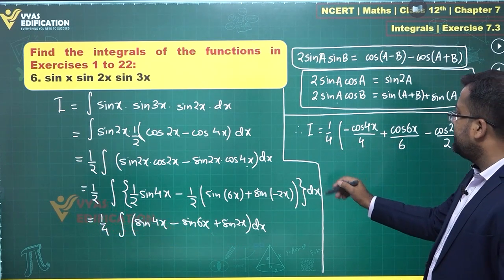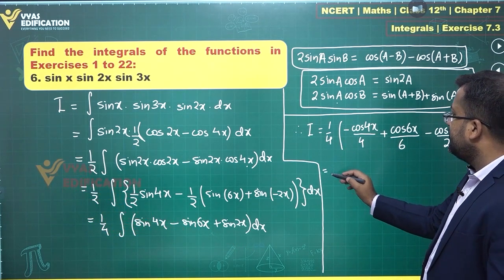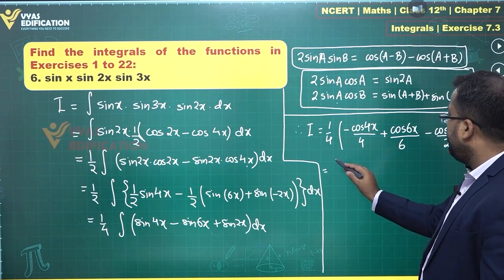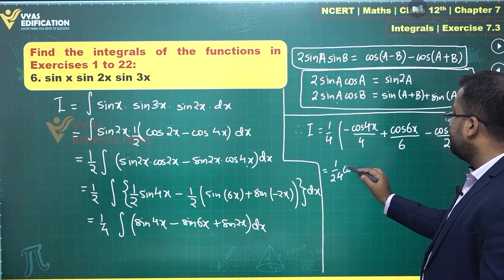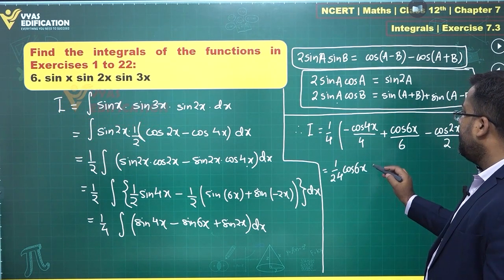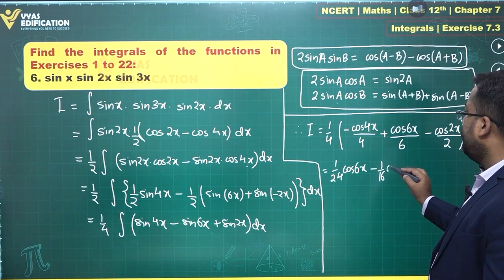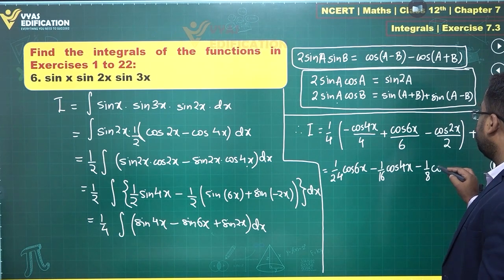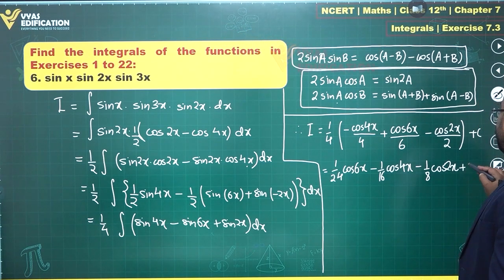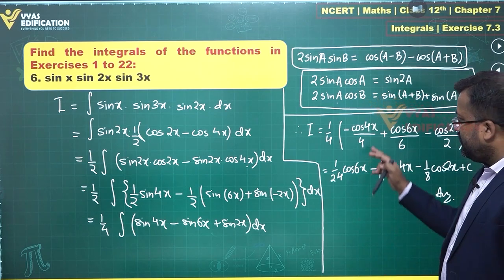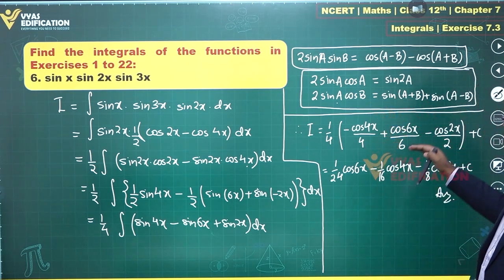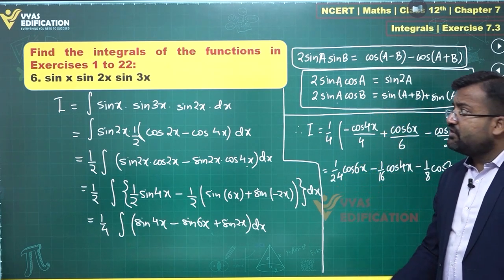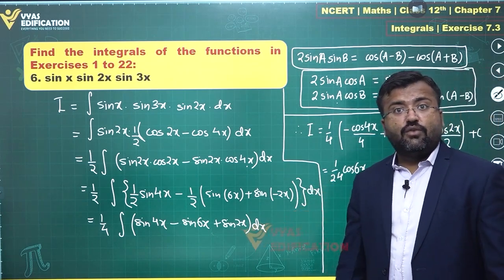At max, what you can do is you can multiply this 4 inside or you can leave the answer at this stage. What you get is 1 by 24 cos(6x) minus 1 by 16 cos(4x) and minus 1 by 8 cos(2x) plus constant. This is the form of answer or this is another form of the answer. Leave the answer at this stage or this stage. That's all in the sixth question over here.